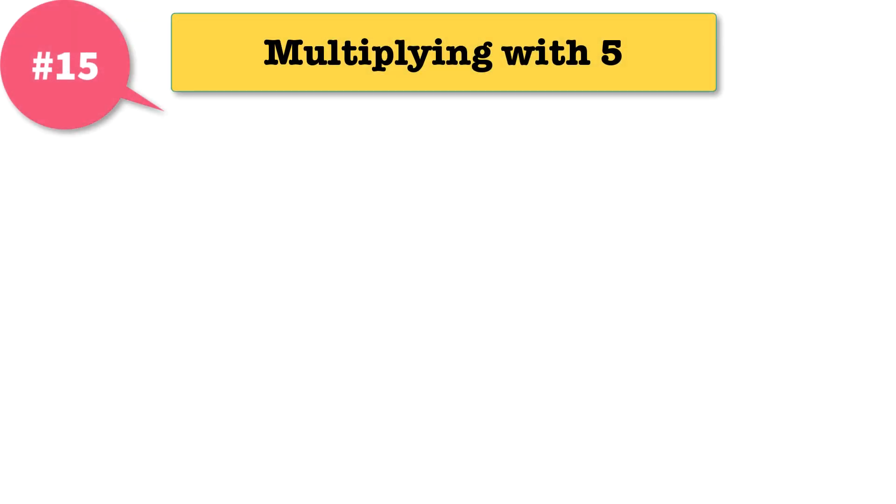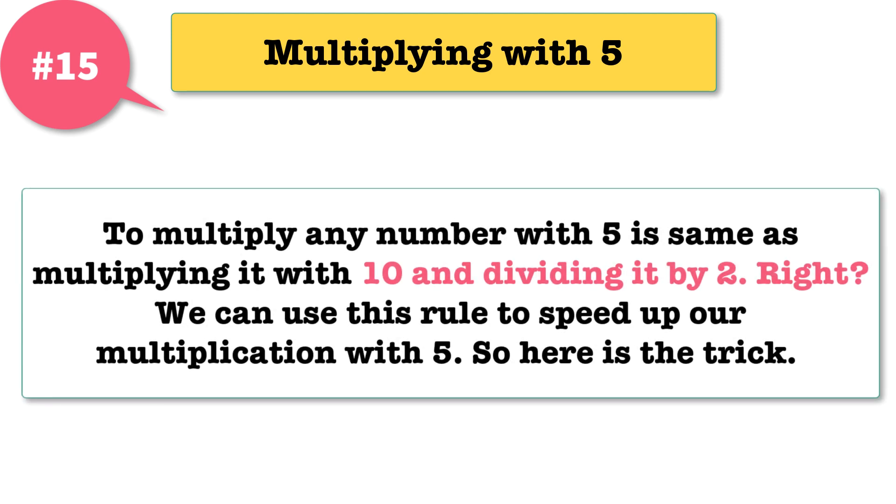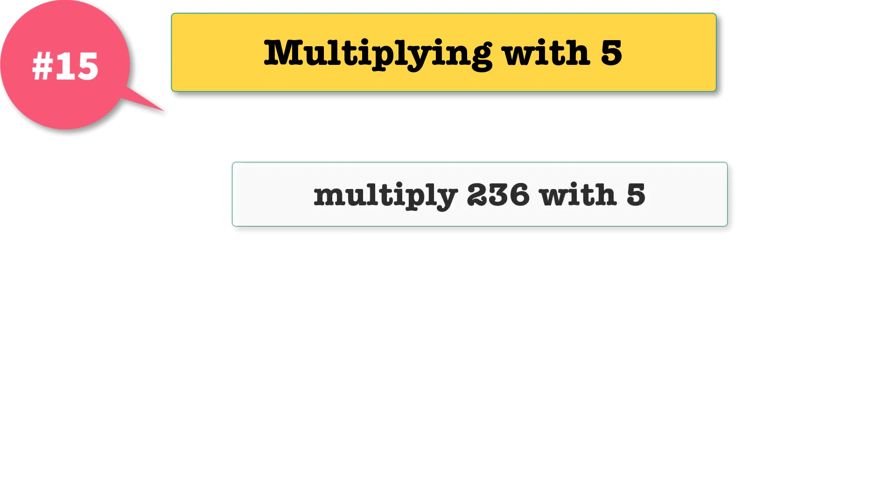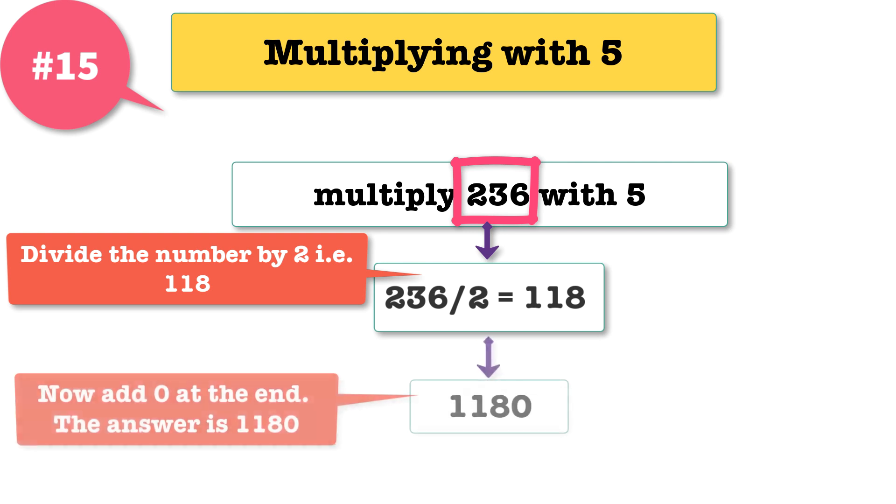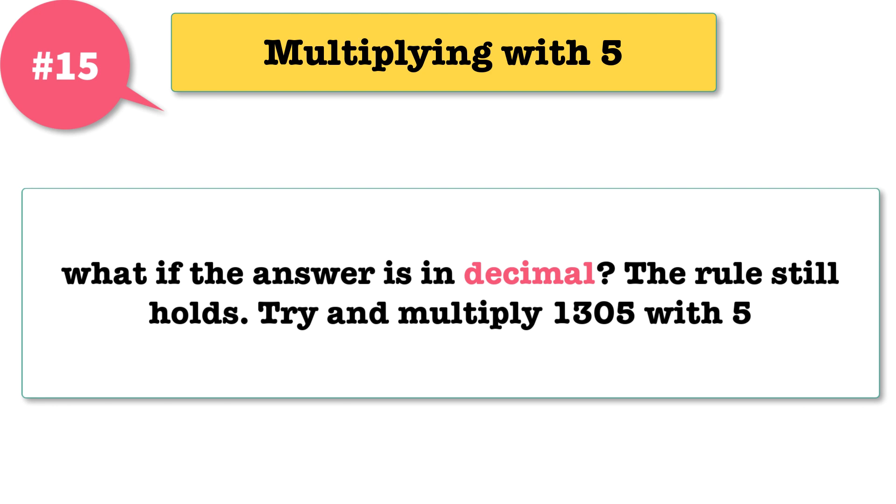15: multiplying with 5. To multiply any number with 5 is same as multiplying it with 10 and dividing it by 2. Right? We can use this rule to speed up our multiplication with 5. So here is the trick. Say you want to multiply 236 with 5. Follow these steps. Step 1: divide the number by 2, that is 118. Step 2: now add 0 at the end. The answer is 1180. Was that fast math or what?